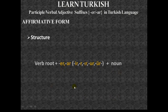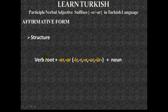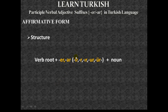Now let's see how to form the affirmative structure. First there is the verb root. Next, the verbal adjective suffixes -er or -ar are added to the verb root. They take the form -ir, -ır, -ur, or -ür depending on the vowel letter of the verb root. Please refer to the slide about simple present tense in Turkish to see how these suffixes are formed depending on the verb root's vowel letter, followed by the noun described by the verbal adjective.